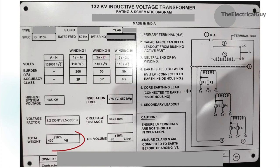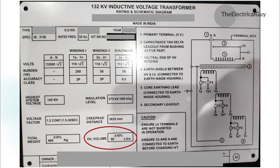Then the total weight of the IVT is given in kg. Next is the total volume of oil used in the IVT as an insulating medium, given in litres.